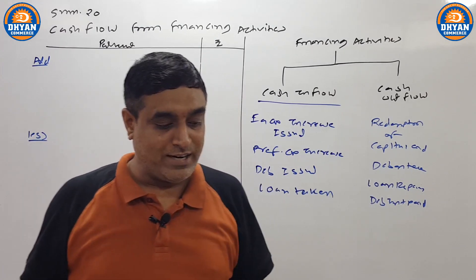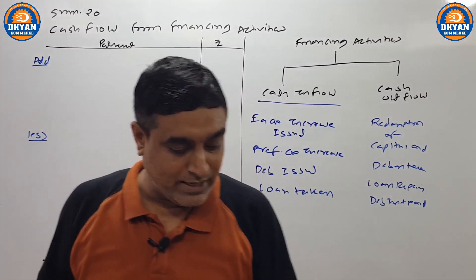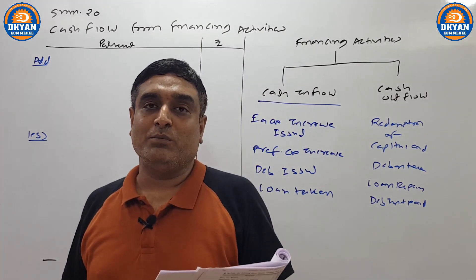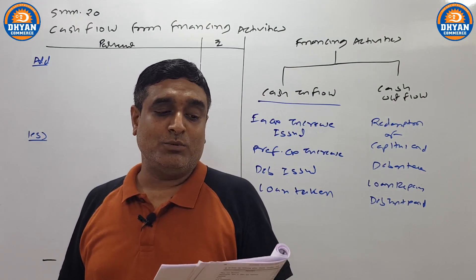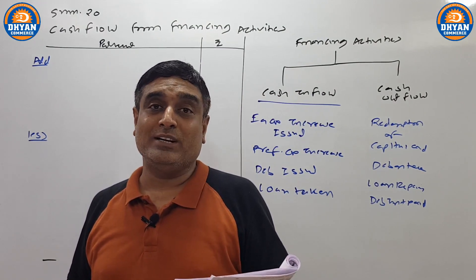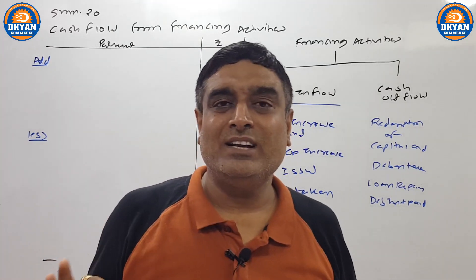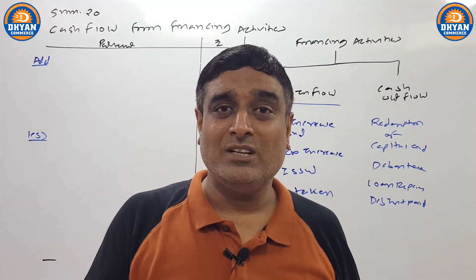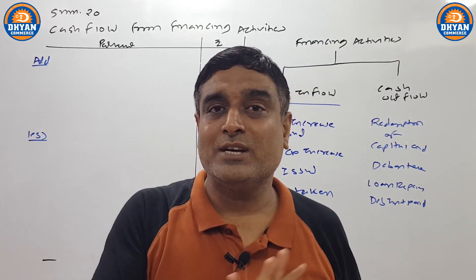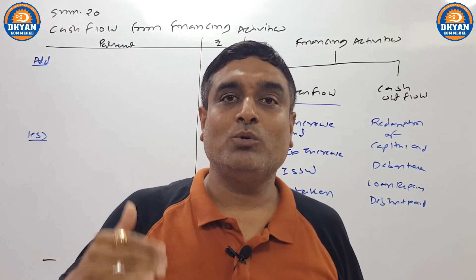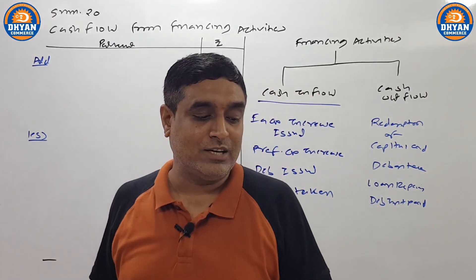Mere saamne question number 20 of the textbook hai. Main reading start karta hoon — dhyan dena. Page number, I think, 287. From the following information, calculate cash flow from financing activities. Niche purchase se lekar paid for patents tak alag-alag points diye hue hain. Aapko statement prepare karni hai. Yahan dhyan rakhna hai — is question ke andar maatraf financing activities ke points lene hain. Operating ya investing activities ke points dhyan mein nahi lene hain. Teacher ne confuse karne ke liye woh points diye hain — unhe neglect karna hai.